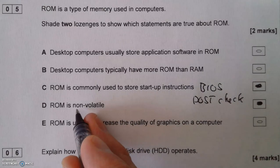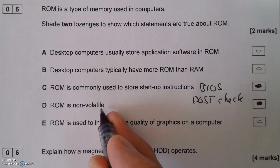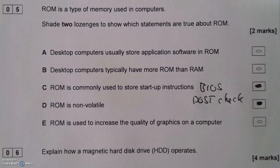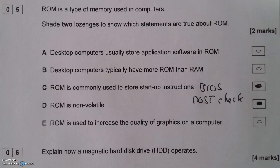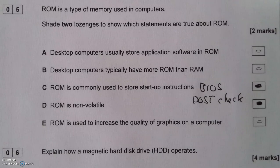Let's go back and look at this word — non-volatile. What that means is when you switch off your computer, there's no power going to RAM, and whatever is stored in RAM disappears — I'll cover that in another video. But ROM isn't like that. It's powered by its own little battery, and when you turn off your computer it doesn't lose its settings. So ROM is non-volatile — when it's not powered by the computer, it can still hold the data. It doesn't lose any data when you turn off your computer.